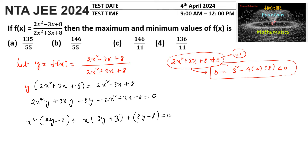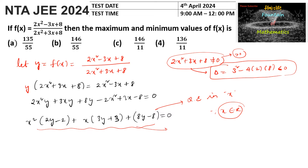This is a quadratic equation in the variable x. Since x must be a real number, the discriminant of this quadratic must be greater than or equal to 0. So we compute b² - 4ac: (3y + 3)² - 4(2y - 2)(8y - 8) ≥ 0.